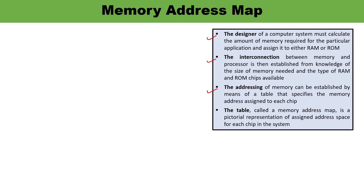The memory address map specifies the memory address assigned for each particular chip — for example, addresses starting from 0 going up to some value. This table is a pictorial representation of the assigned address space for each chip in the system. If a system has 10 chips, each chip will have an assigned address space. Let us now discuss this with the help of an example.